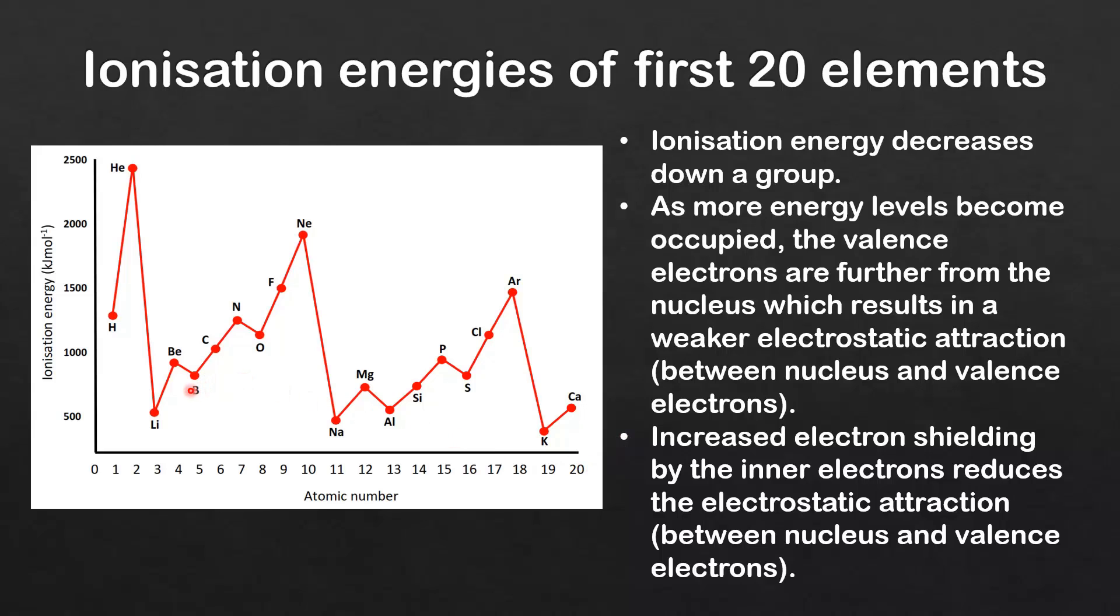Next we're going to have a look at the exceptions to the trend, so that's beryllium and boron, nitrogen and oxygen, magnesium and aluminium, and phosphorus and silicon.